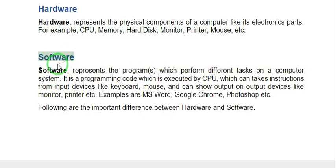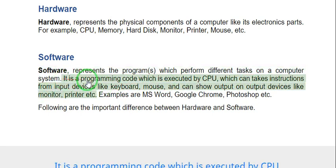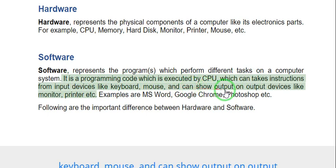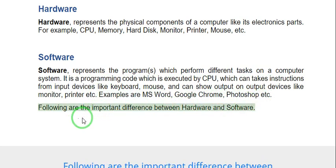Software represents the programs which perform different tasks on a computer system. It is a programming code which is executed by the CPU, which can take instructions from input devices like keyboard and mouse, and can show output on output devices like monitor, printer, etc. Examples are MS Word, Google Chrome, Photoshop, etc. Following are the important differences between hardware and software.